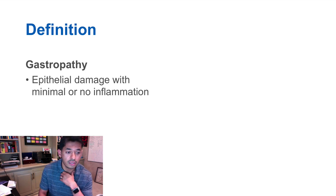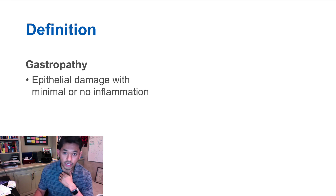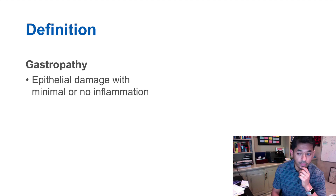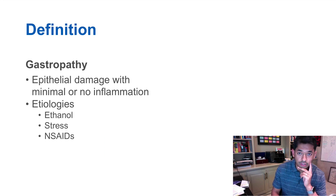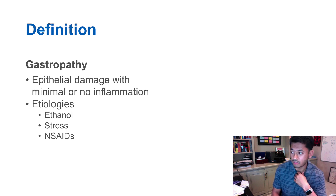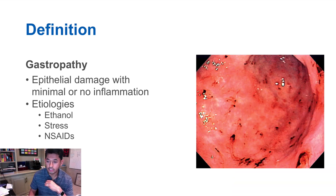So let's define what gastropathy is. Gastropathy is defined as epithelial damage with minimal or no inflammation. This means you have damage on the very top layer of the GI tract with very minimal or no inflammation seen on histology. There are a lot of etiologies, including alcohol, stress, and the most common cause — non-steroidal anti-inflammatory medications. If you take a look at this picture, this is a patient who took NSAIDs, and you can see superficial damage on the stomach wall. When you take biopsies, you see minimal or no inflammation within the histology.